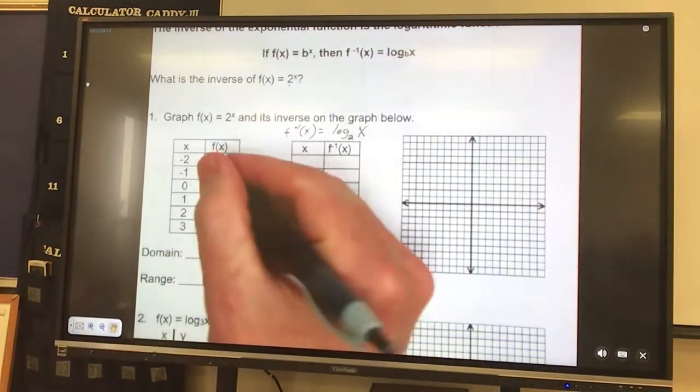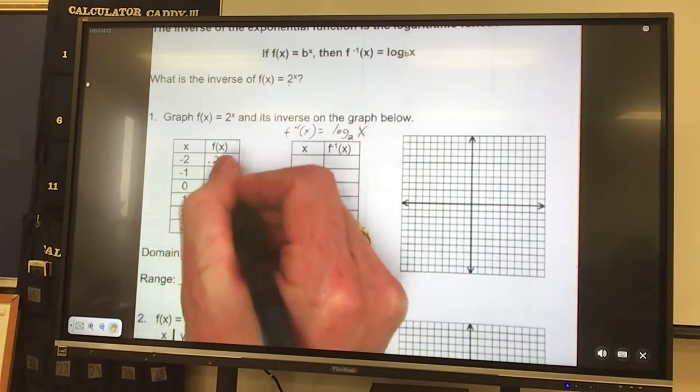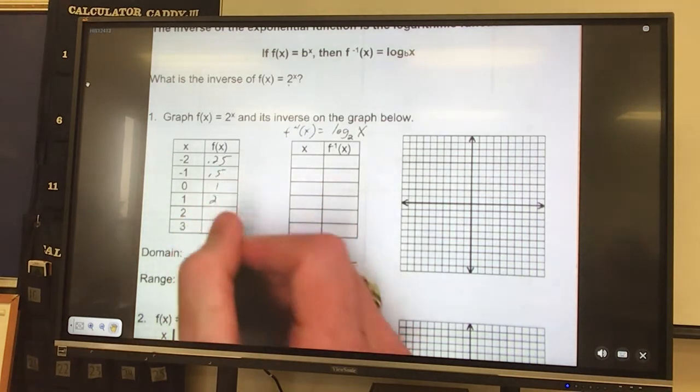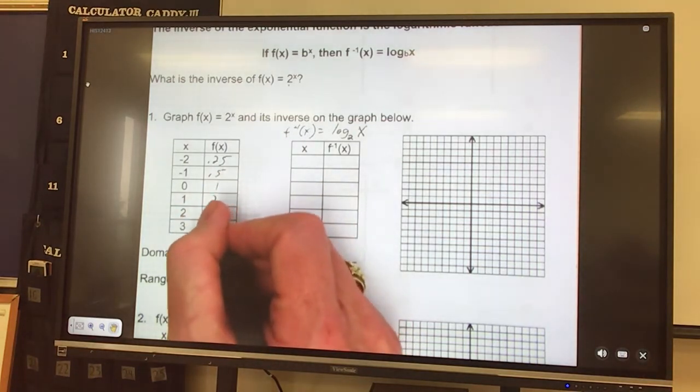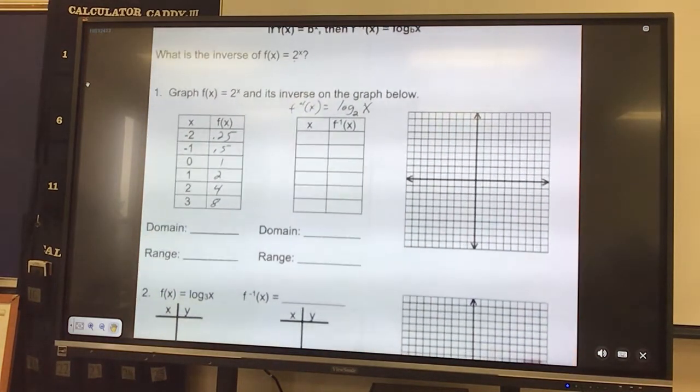So negative 2 is .25, negative 1 is .5, 0 is 1, 1 is 2, 2 is 4, 3 is 8.